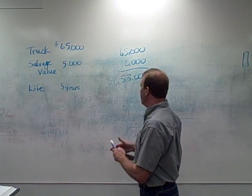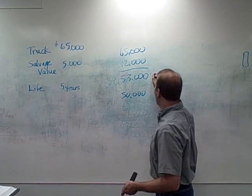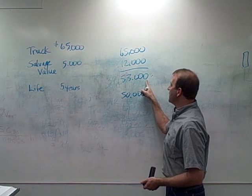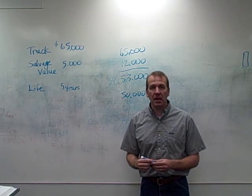What if we sold it for $50,000? If we sold it for $50,000, well, we've got a book value of $53,000. If we sold it for $50,000, we have a loss of $3,000.